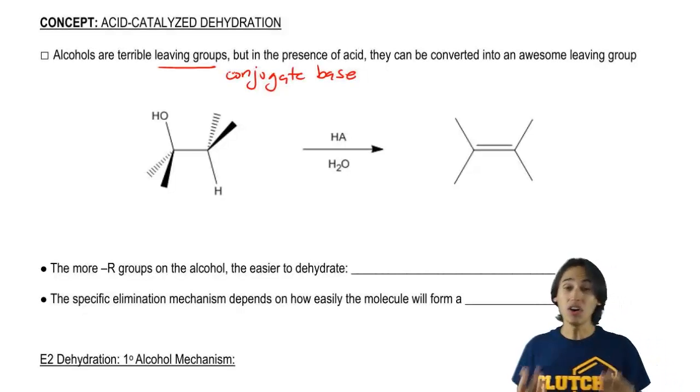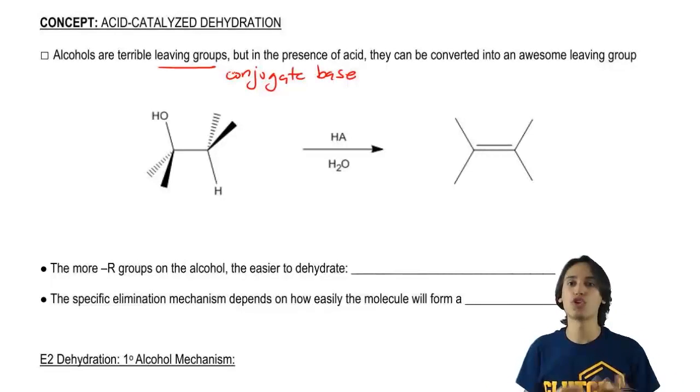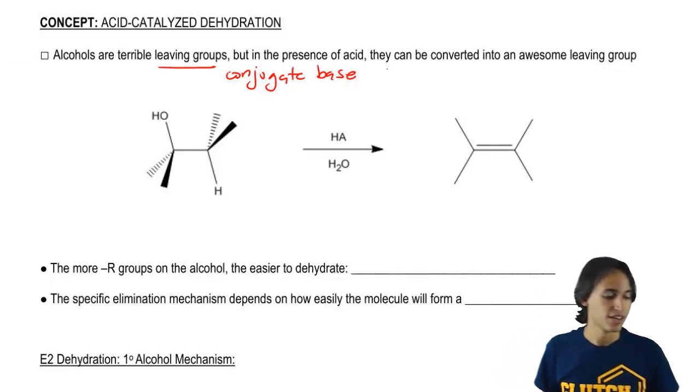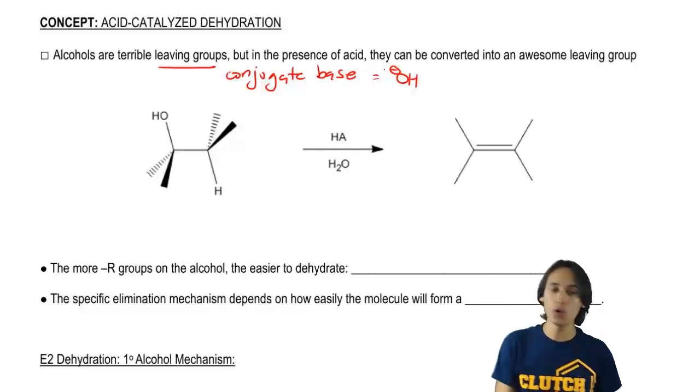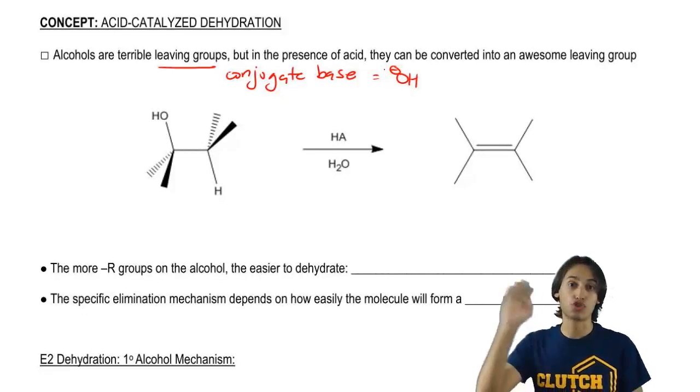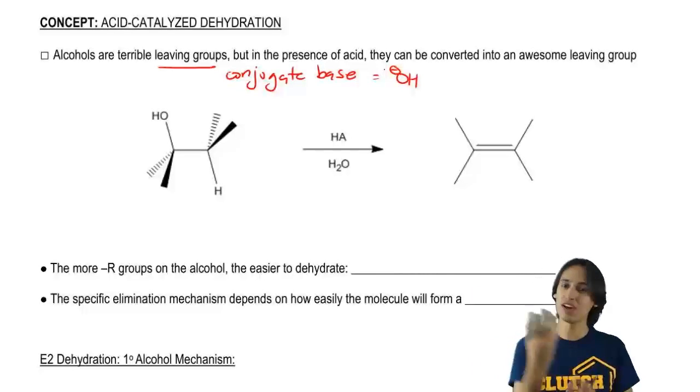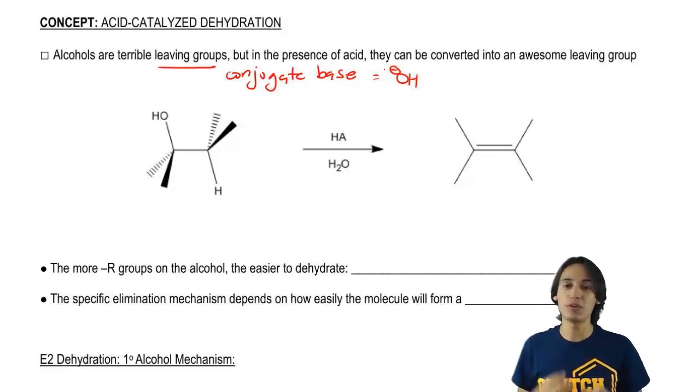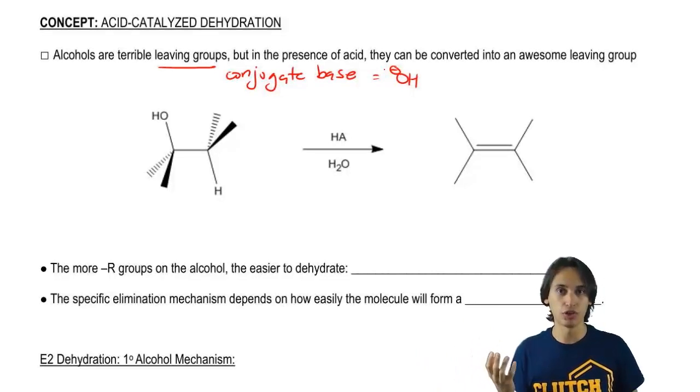Basically, alcohols are really bad leaving groups or they're really bad conjugate bases. They hate to become OH-. Why? Because OH- is actually a really strong base. Remember that you always want to go from stronger to weaker. If we're making OH- hydroxide, that's a really strong base. So this is not going to be very favored to just leave a molecule.